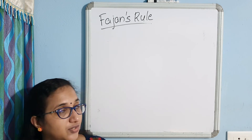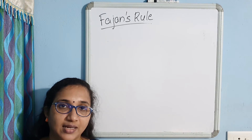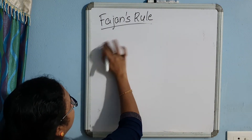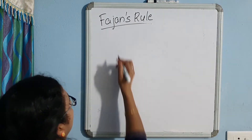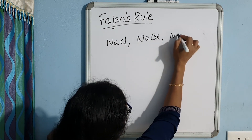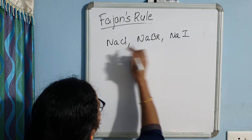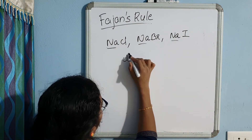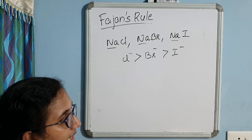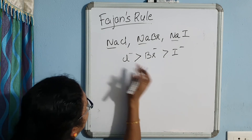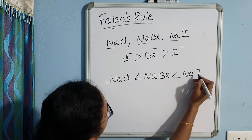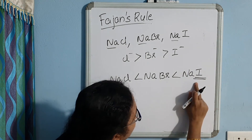Now let us summarize Fajan's Rule. According to Fajan's Rule, the covalent character of an ionic compound is favored by high polarizing power of the cation and high polarizability of the anion. For example, comparing NaCl, NaBr, and NaI — the cation is the same, but the anion size increases progressively. With increasing anion size, polarizability increases and covalent character increases. So the order is: NaCl < NaBr < NaI.